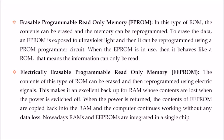Then there is EPROM — Erasable Programmable Read Only Memory. The contents can be erased and the memory can be reprogrammed. To erase the data, EPROM is exposed to ultraviolet light and then reprogrammed using a PROM programmer circuit. While EPROM is in use, it behaves exactly like a ROM — the information can only be read, not written.